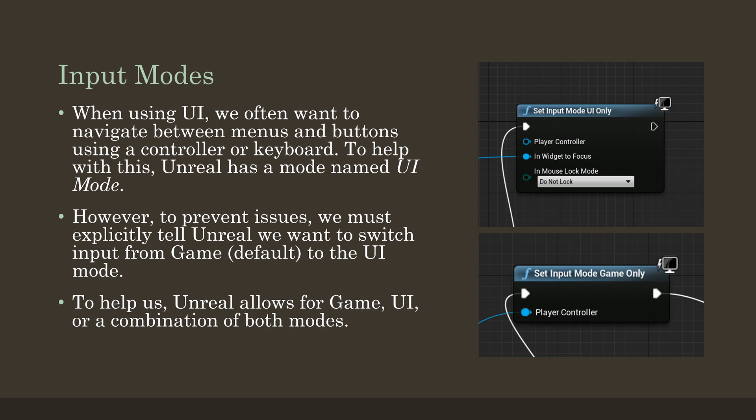Are we in game input mode or are we in UI input mode? These are two different modes to shift user input. We also need to think about where we access input modes from. We have a few different options: we have access to game instance (the game layer), the level blueprint, and actor blueprints. We've seen previously how pressing a button could show a menu, but sometimes we want a menu to come up and then go back down or switch input modes.